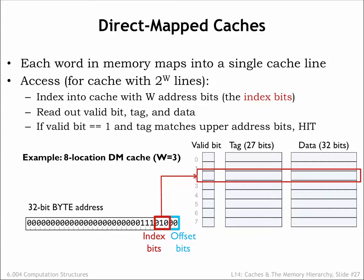Next we'll need to use 3 address bits to select which of the 8 cache lines to search. We choose these cache index bits from the low-order bits of the address. It's because of locality — the principle of locality tells us that it's likely the CPU will be requesting nearby addresses, and for the cache to perform well, we'd like nearby locations to be held in the cache at the same time. This means nearby locations will have to be mapped to different cache lines, and since their addresses differ in the low-order bits, we use those bits as the cache index bits.